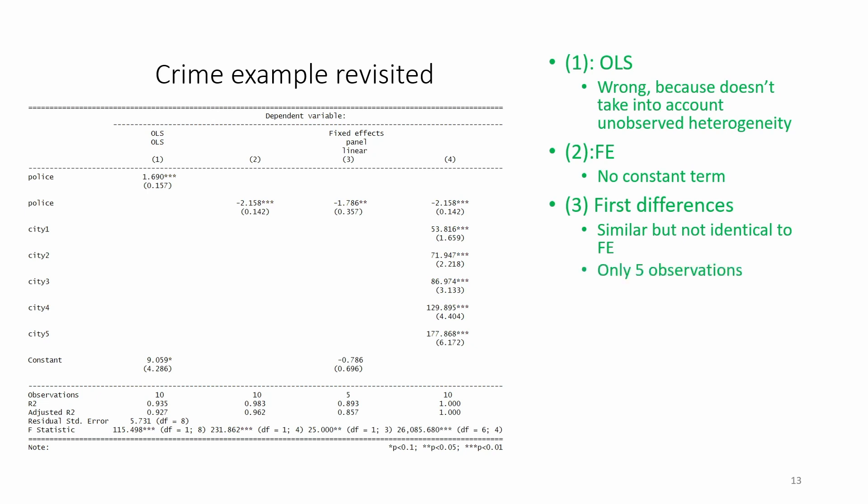Note that we only have 5 observations here, whereas we have 10 in the other regression models. This is because we lose one time period of observations when taking differences. If we have two observations for each city, if we then calculate the differences between these two, we end up with just one observation per city regarding the differences over time.